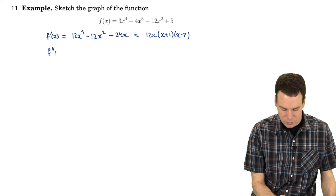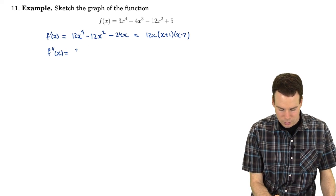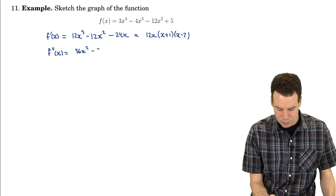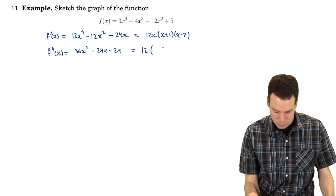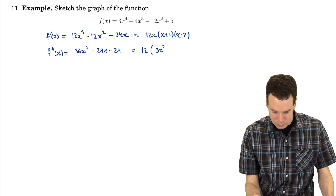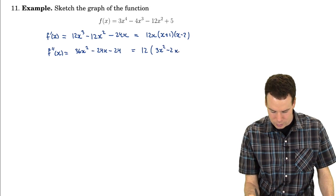What's the second derivative? f''(x) = 36x² - 24x - 24. We can factor out 12, giving us 12(3x² - 2x - 2).